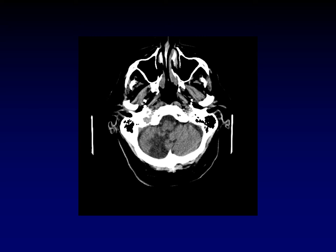This is an axial CT image through the posterior fossa. The right cerebellar hemisphere looks as it should — round in cross section, filling its half of the posterior fossa. On the left side, it looks like someone has taken a huge bite out of the posteromedial cerebellum. This is encephalomalacia — dead brain. I know it's been dead for a long time based on its density: it's essentially the same as CSF, much darker than brain, indicating a mature, chronic infarct.